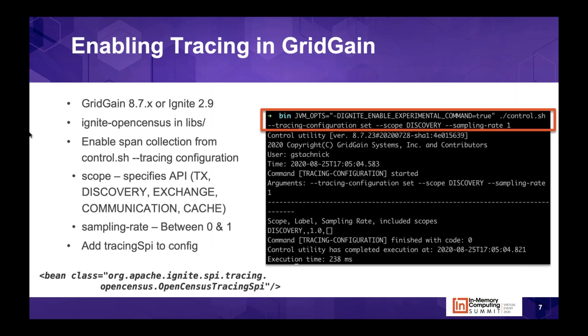How do we enable tracing in GridGain and Ignite? First, be aware of minimum version requirements: GridGain 8.7 and Apache Ignite 2.9. You need to make sure the OpenCensus libraries are on your classpath — in Ignite they ship in the optional libs directory, so you'll need to move them into libs. Once on the classpath, restart your cluster. The next step is to add the tracing SPI to your cache or cluster configuration file, specifically adding the OpenCensus tracing API to your configuration.